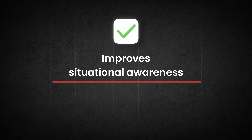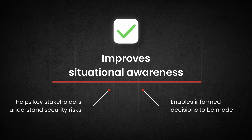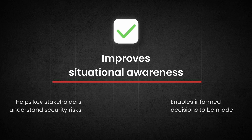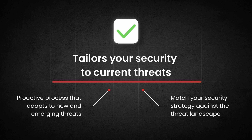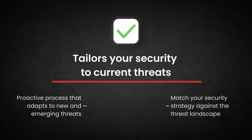Threat modeling also improves situational awareness — it helps key stakeholders understand the security risks involved in a system or application so they can make informed decisions. Finally, threat modeling tailors your security to current threats. It is a proactive process that adapts to new and emerging threats to keep your systems, applications, and data secure as the threat landscape evolves. Threat modeling is a must-do activity for all organizations wanting to get serious about security. But how do you perform threat modeling? Let's explore.